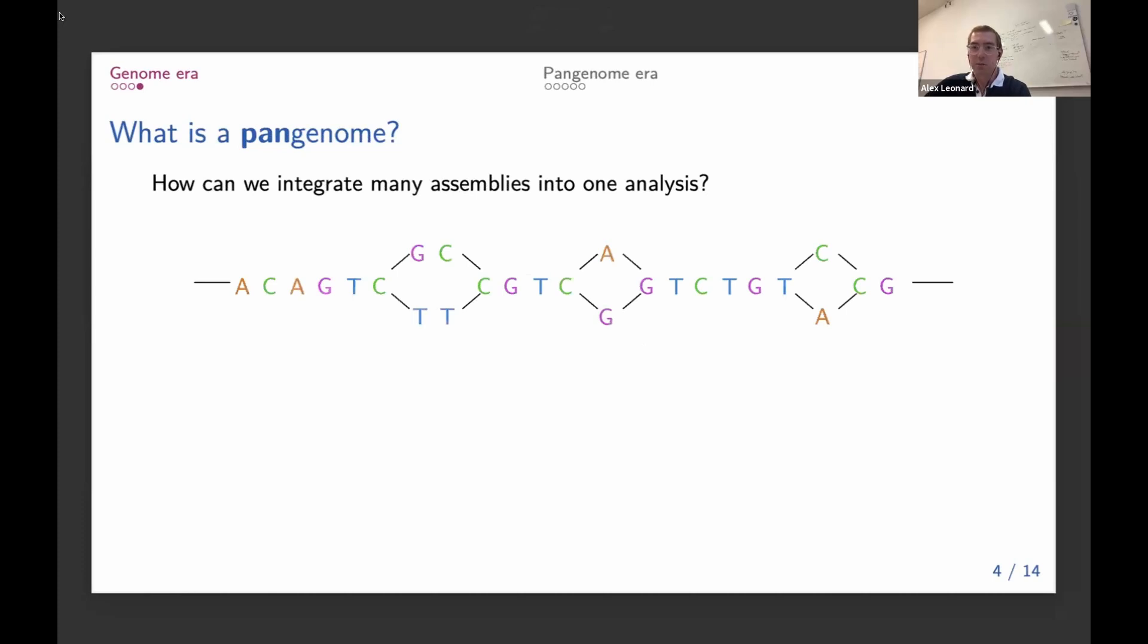And then we try and collapse it together. So we keep the regions that are similar as just single pieces of sequence, and then we represent differences between the genomes as these nodes and edges in a graph.